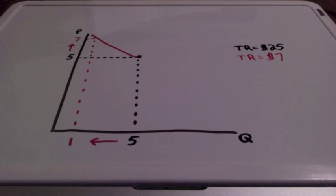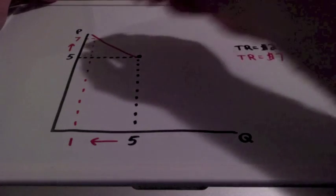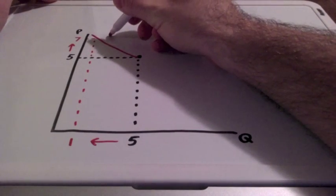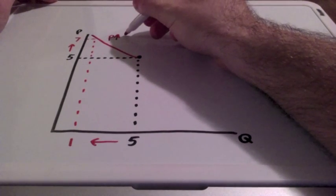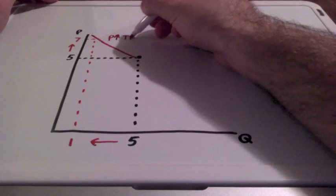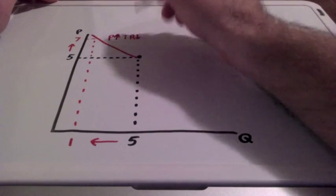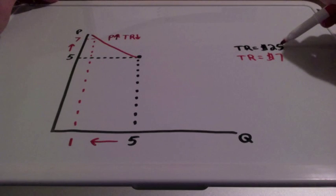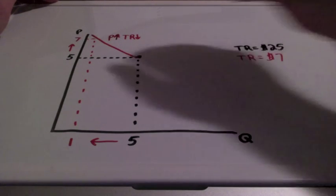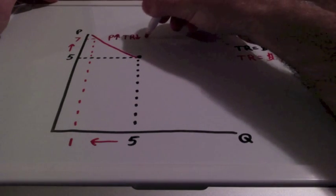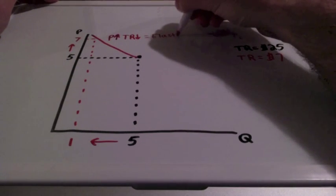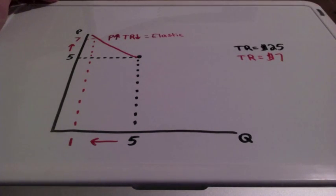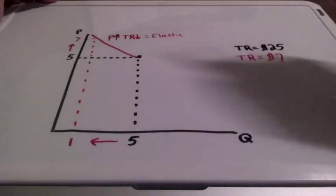This is referred to as the elastic side of demand. When prices go up and our total revenue goes down, as you can see, our total revenue went down from $25 to $7. This is known as the elastic part of demand, and it's labeled here in red.